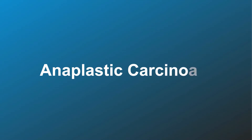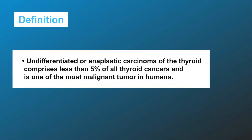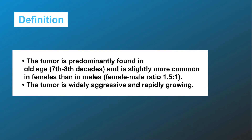Anaplastic carcinoma — definition: undifferentiated or anaplastic carcinoma of the thyroid comprises less than 5% of all thyroid cancers and is one of the most malignant tumors in humans. The tumor is predominantly found in old age, 7th and 8th decades, and is slightly more common in females than in males, with a female-to-male ratio of 1.5 to 1.